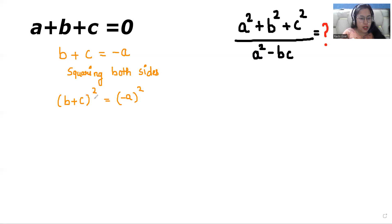So here b plus c whole square, we know the famous identity a plus b whole square is equals to a square plus 2ab plus b square. So we are going to apply this here. So b square plus 2bc plus c square is equals to a square.